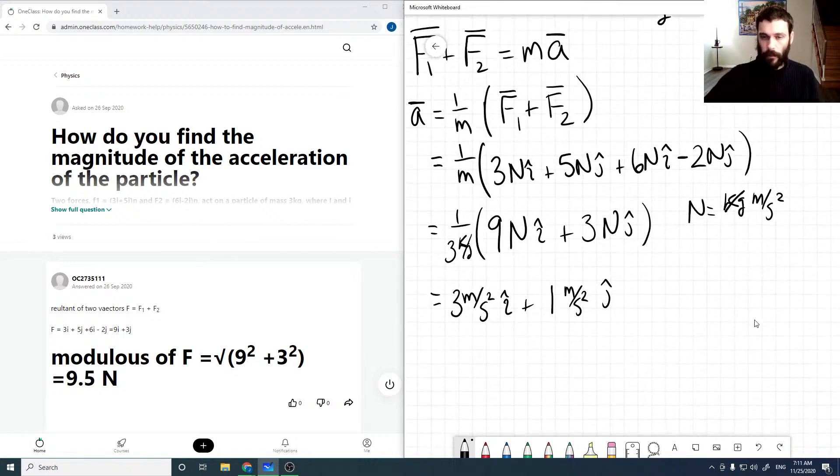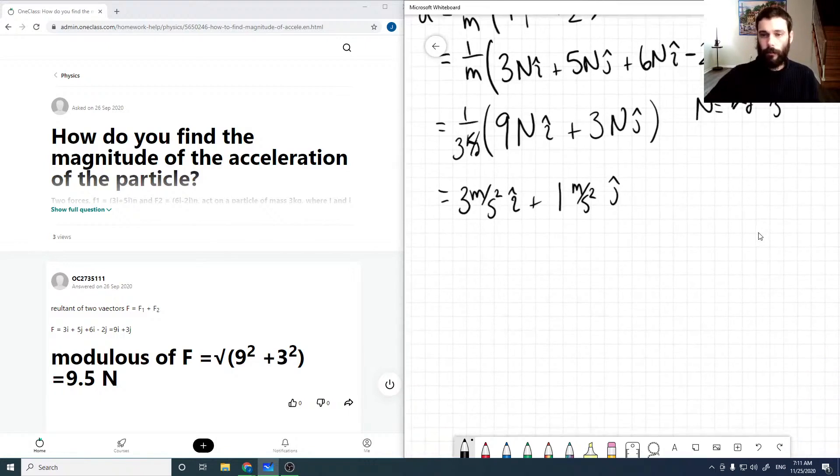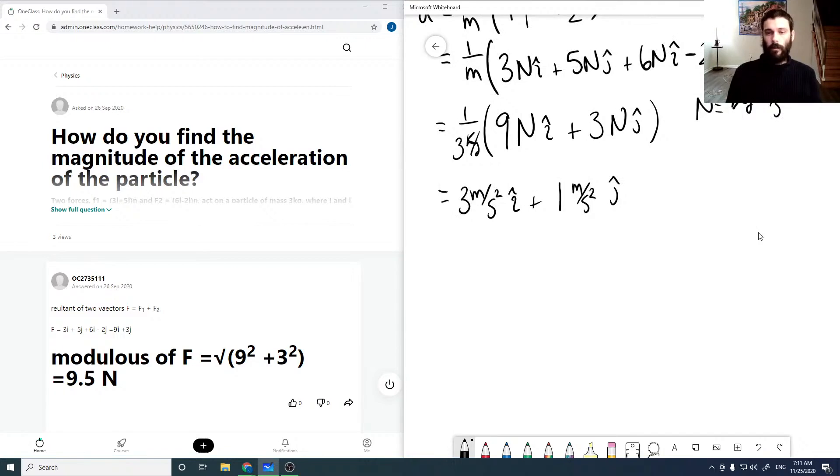Now it wants the magnitude of our acceleration. So the magnitude of a vector is just the square root of the x component squared plus the y component squared. Which is then in this case, 3 meters per second squared squared plus 1 meter per second squared squared.